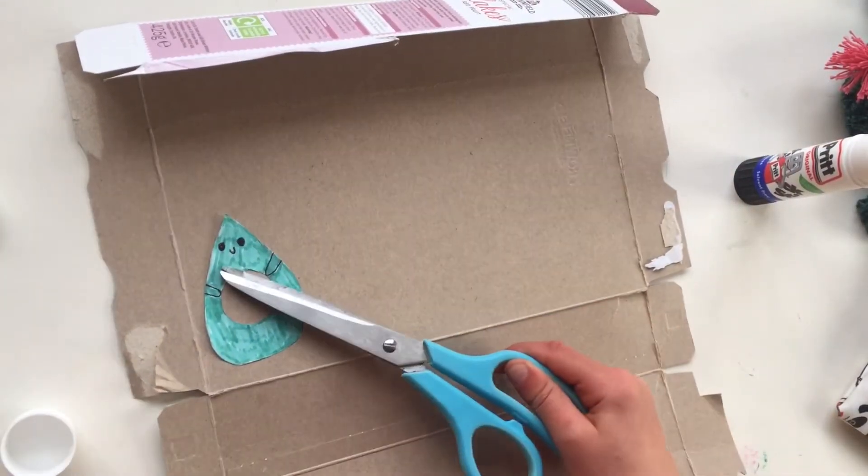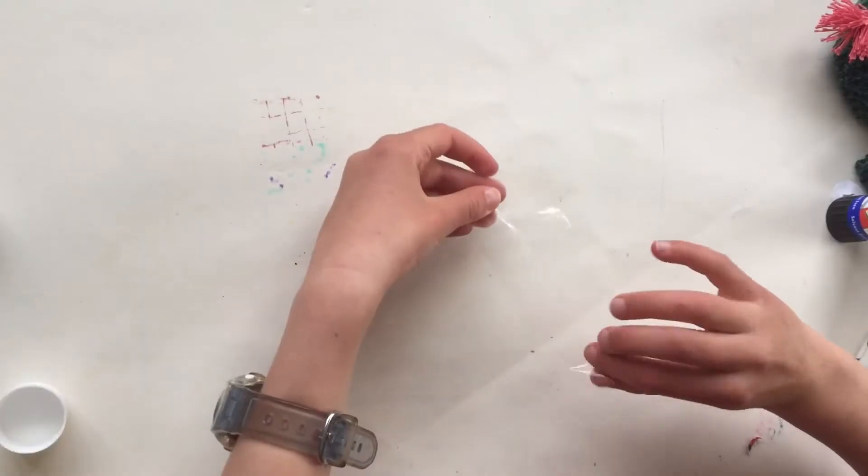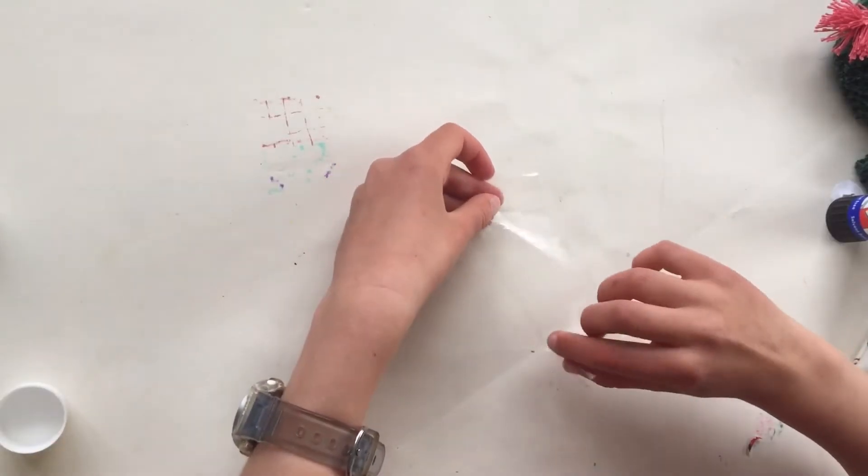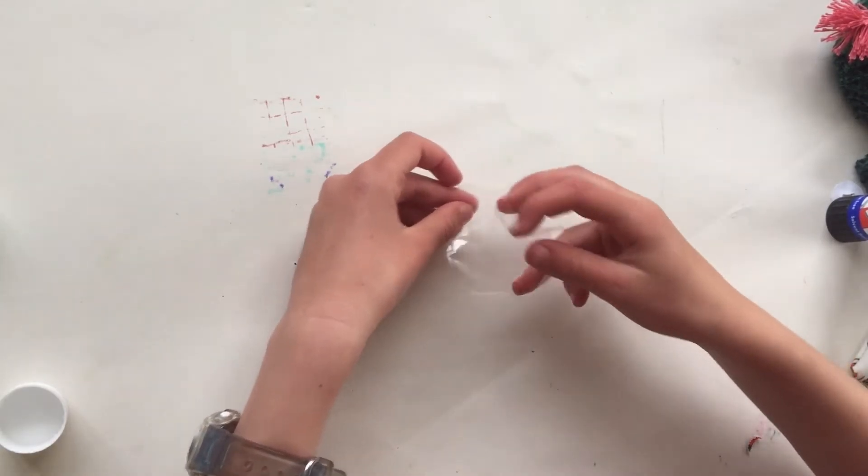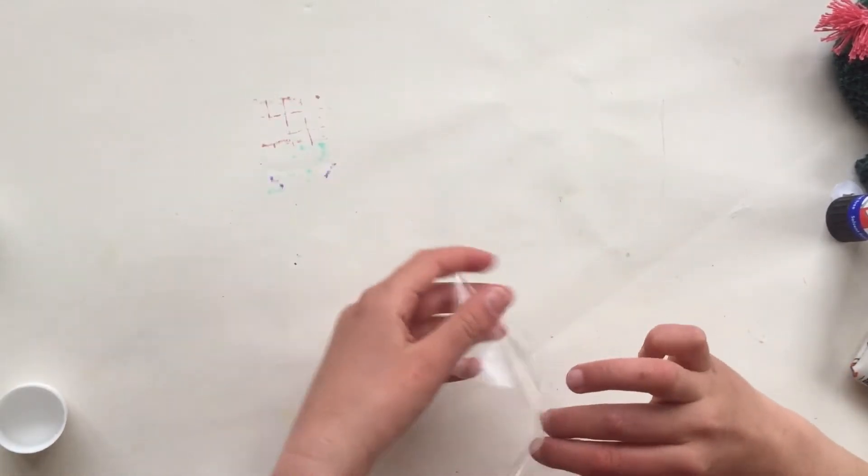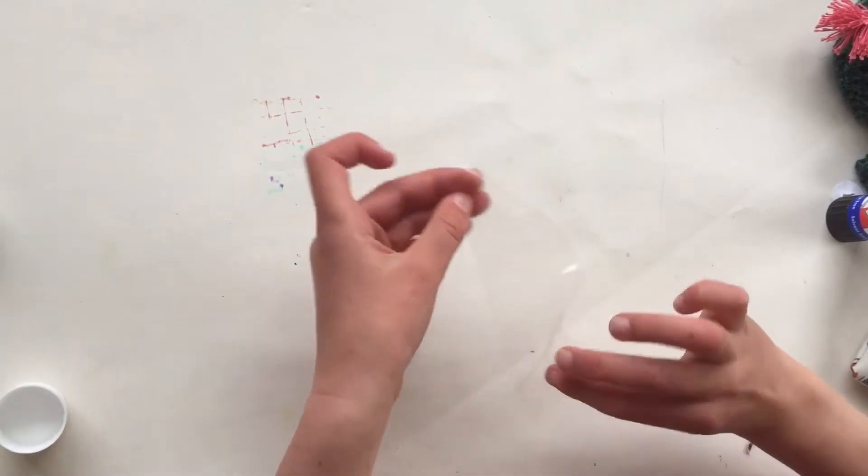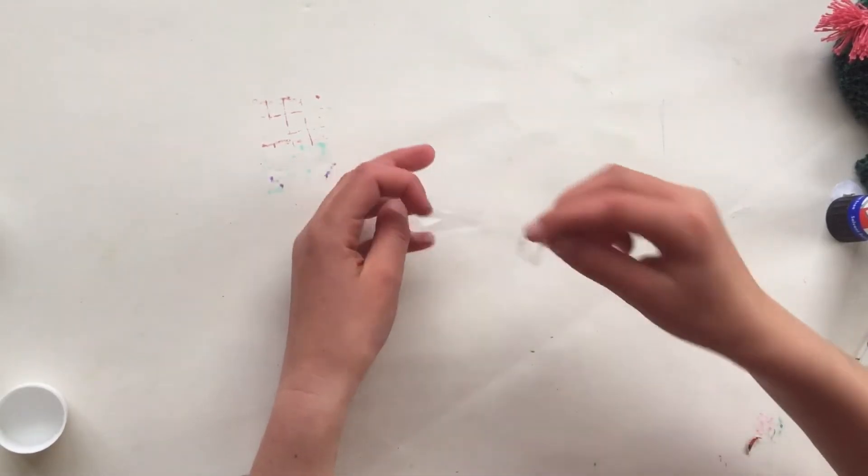Now you need to get some tape and fold it over on itself. If you're using scotch tape, you have to stack the tape up on itself, but if you're using packaging tape, just use it once and that will be a fine length.